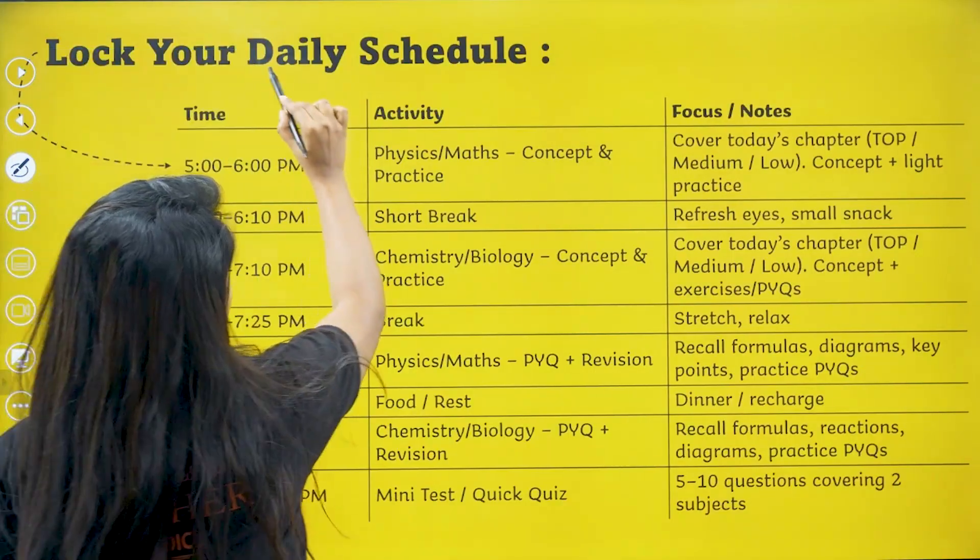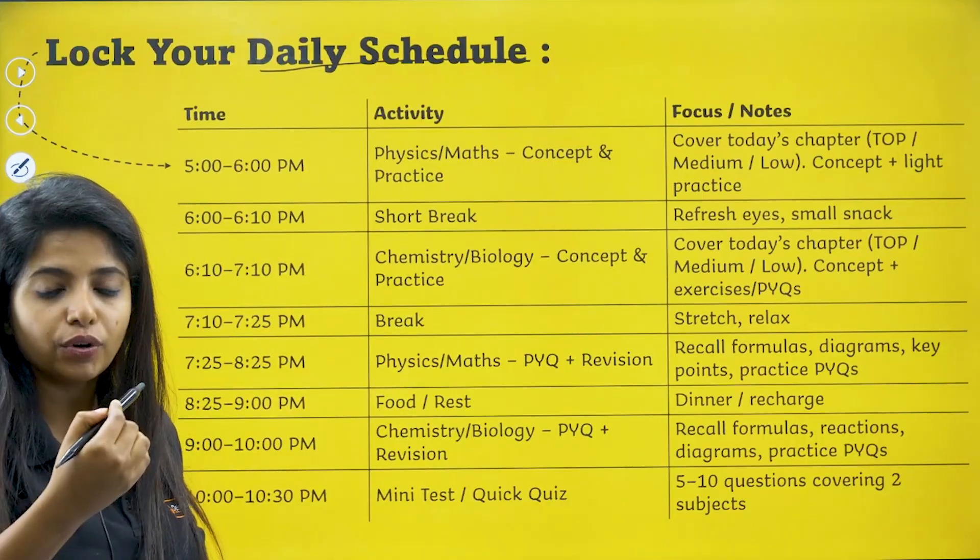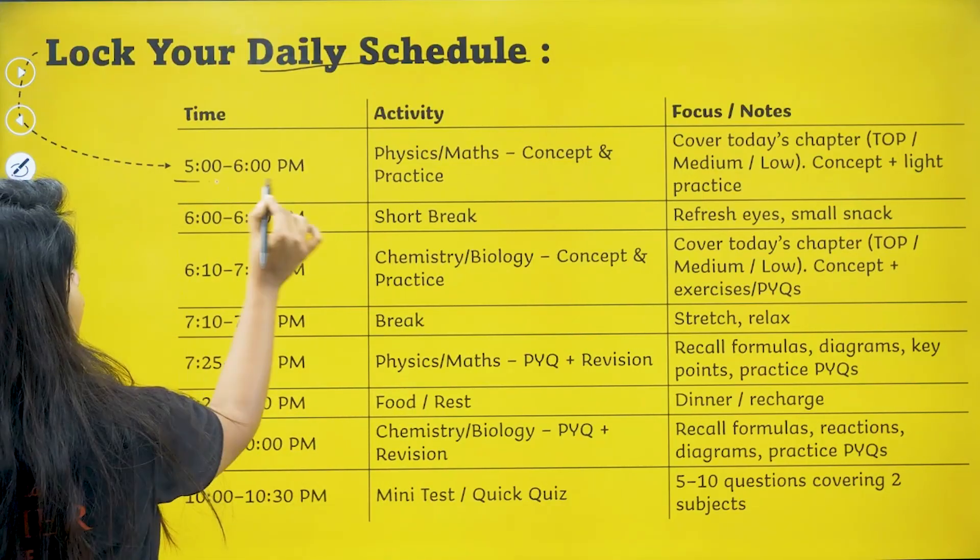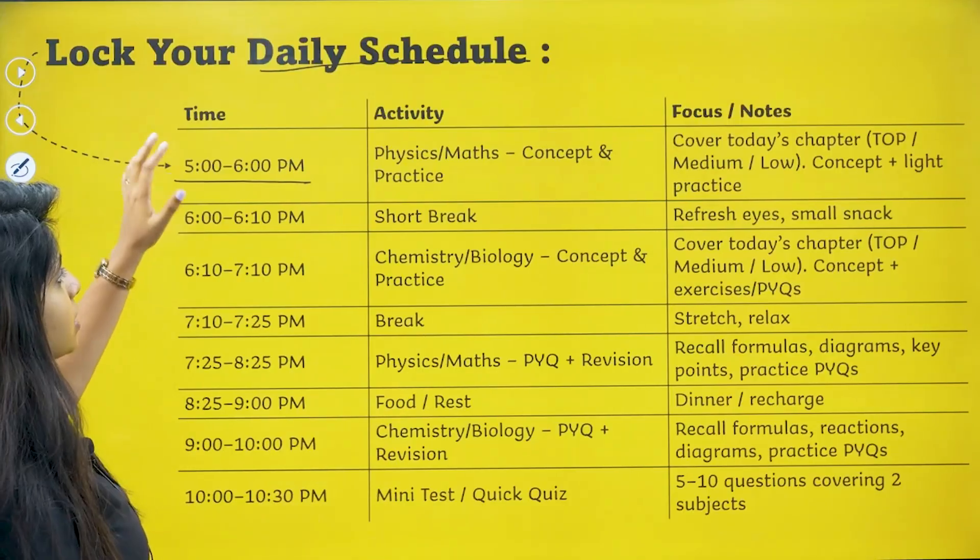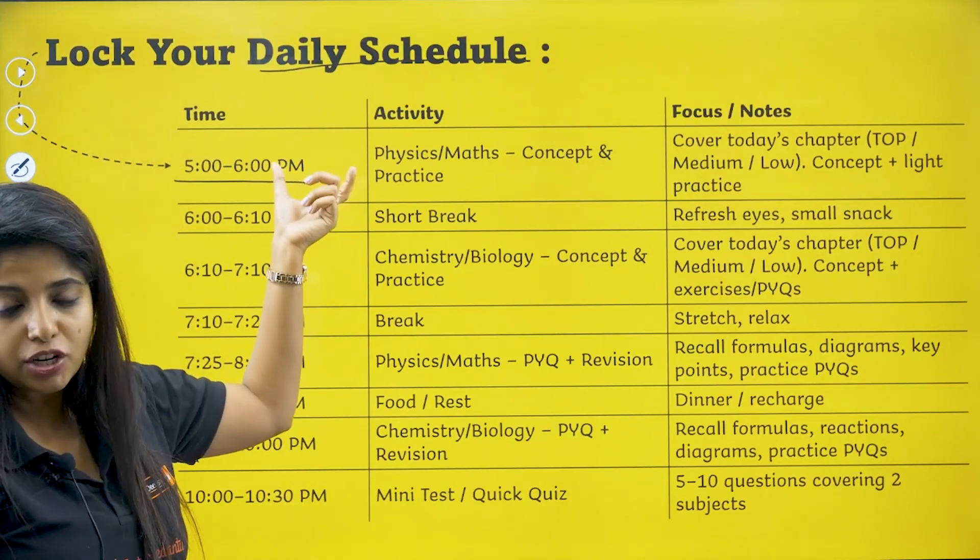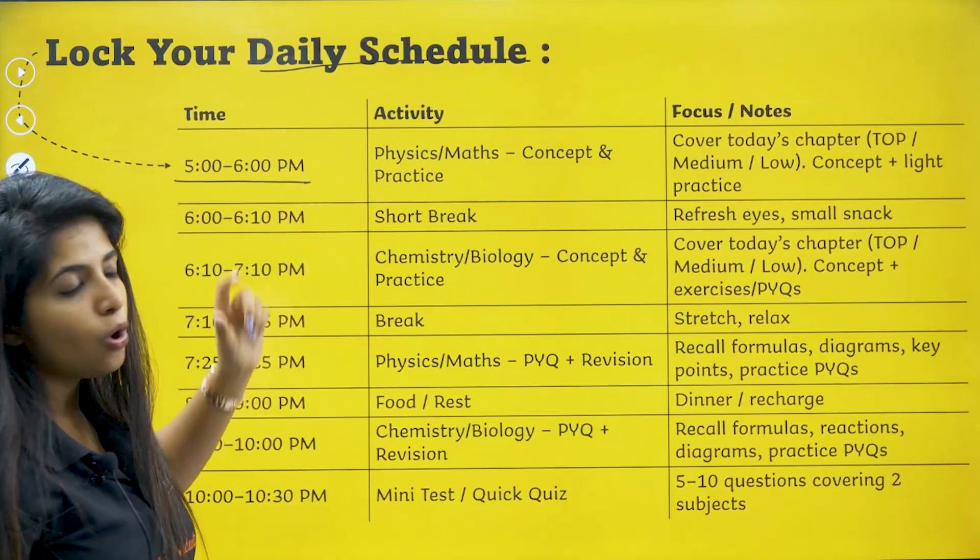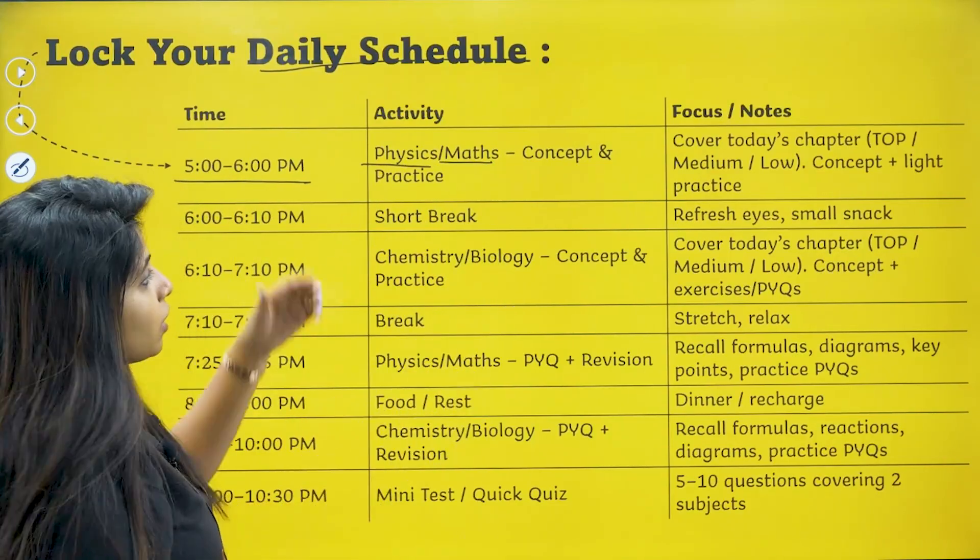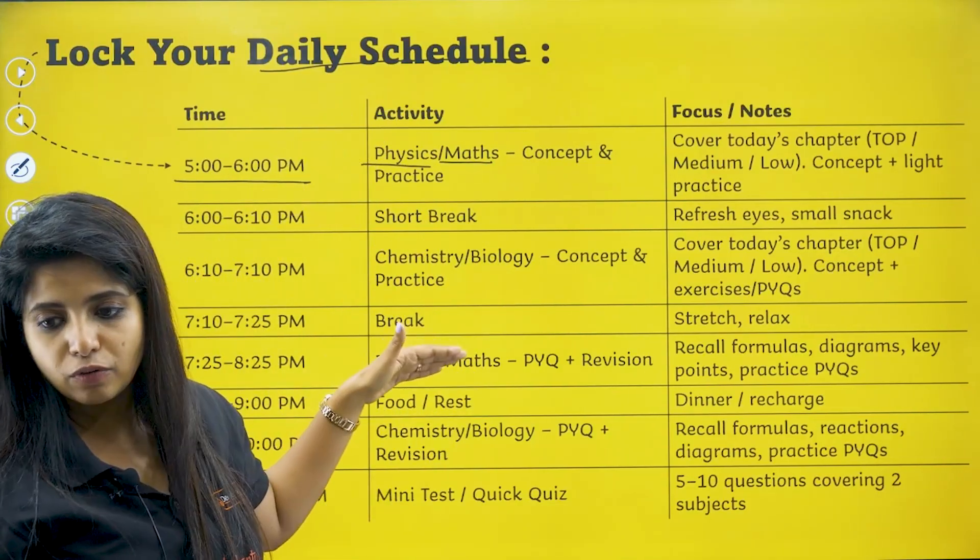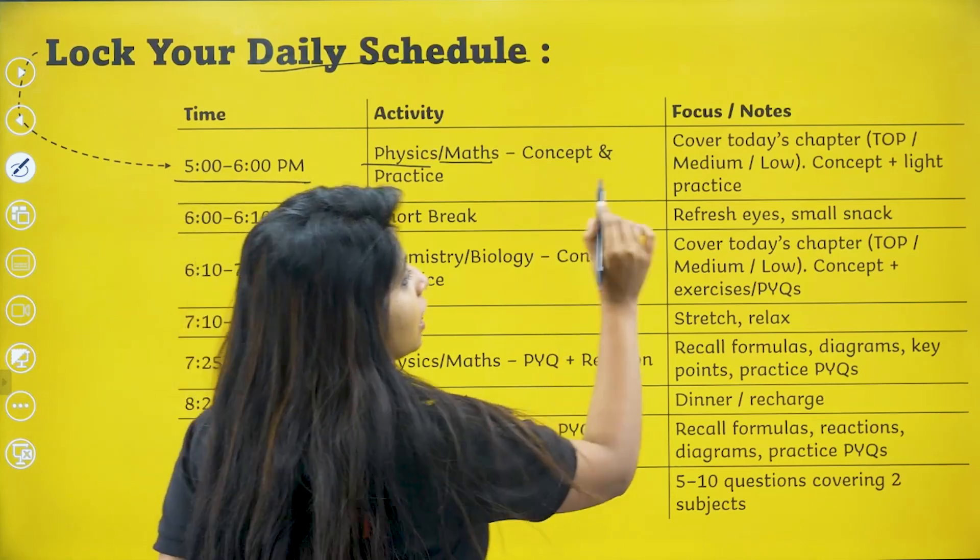So over here, I'm going ahead with a daily schedule that you can follow if at all you want. I'm considering that you come from school at 4:30. You can take some rest, start off your study session from 5 to 6 PM. Over here, either you can take physics or mathematics, whatever subject is there. If you're taking physics, then the other subject that you have to pick would be chemistry.